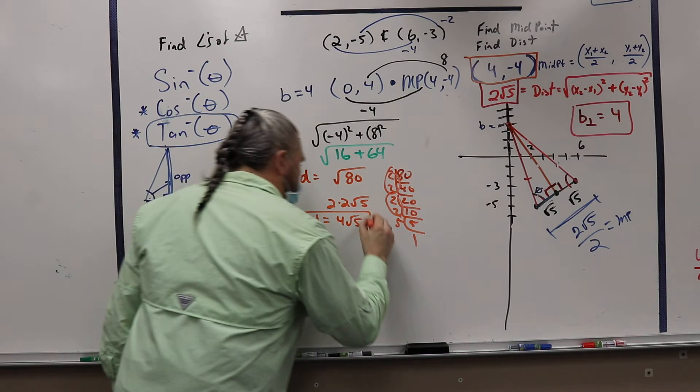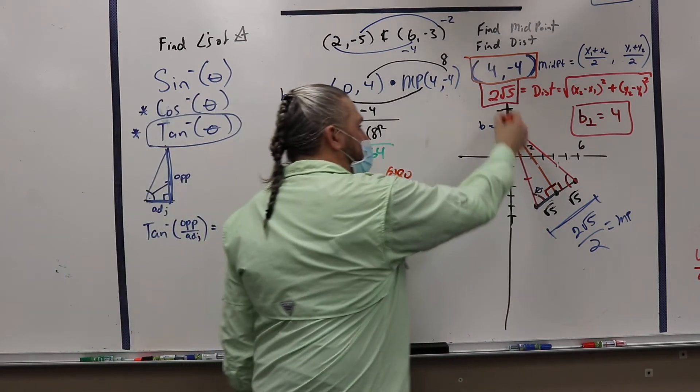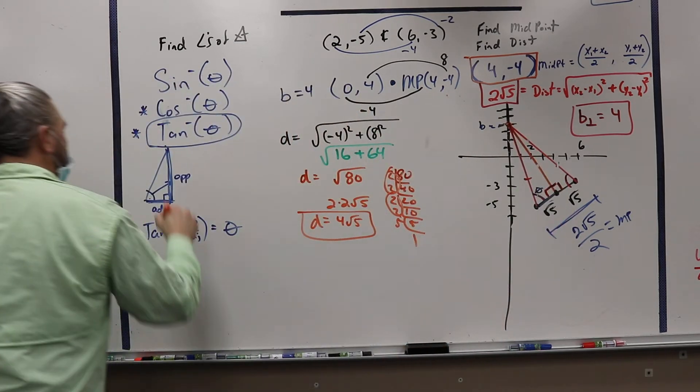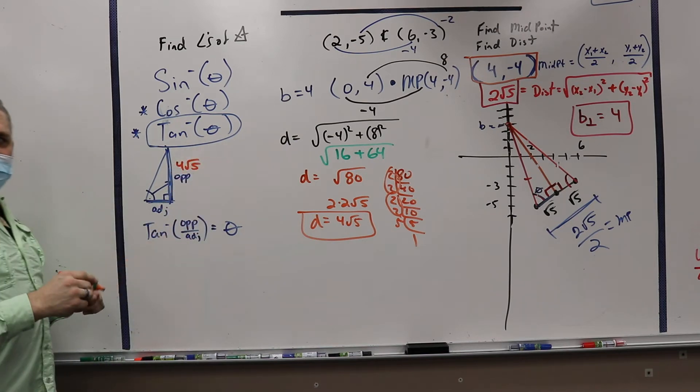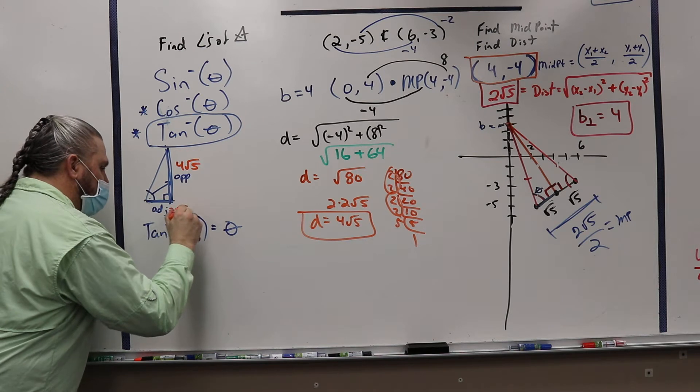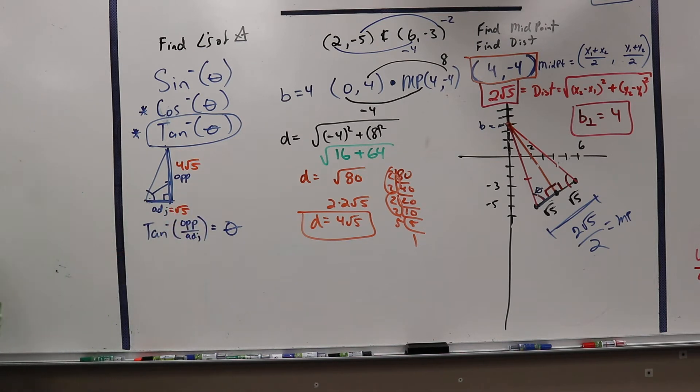So we know that the distance of this triangle, the opposite side, is going to be 4√5. The adjacent side is going to be √5, which is actually kind of cool. I wish I would have done this on purpose. It almost looks like it's done on purpose.